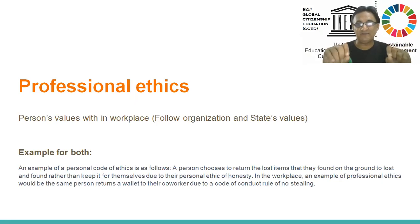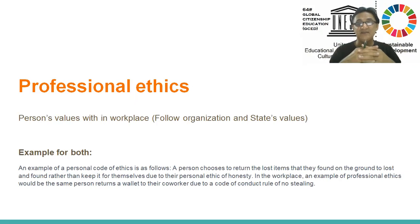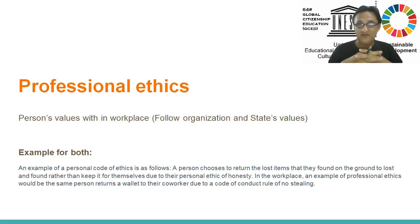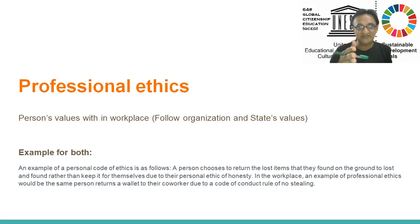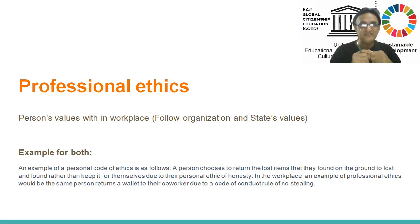Personal values are applied within a workplace alongside the organization's and state's values. Professional ethics means that you have to follow the codes, rules, or code of conduct of the organization or state. An example of personal ethics: a person chooses to return a lost item found on the ground to lost and found rather than keep it, due to their personal ethics of honesty. In the workplace, the same person returns a wallet to a co-worker due to the code of conduct — that's professional ethics. Same situation, but different parameters.